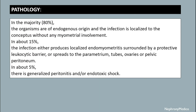In the pathology, in the majority — about 80% of cases — the organisms are of indigenous origin. In about 15% of cases, the infection either remains localized with a protective leukocyte barrier or spreads to the parametrium, tubes, ovaries, or pelvic peritoneum. In about 5% of cases, there is generalized peritonitis and/or endotoxic shock.